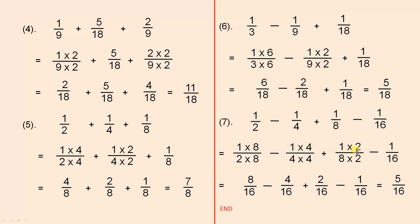There's the working there for each of those fractions. That gives us 8 over 16 minus 4 over 16 plus 2 over 16 minus 1 over 16. 8 minus 4 is 4. 4 plus 2 is 6. 6 minus 1 is 5.